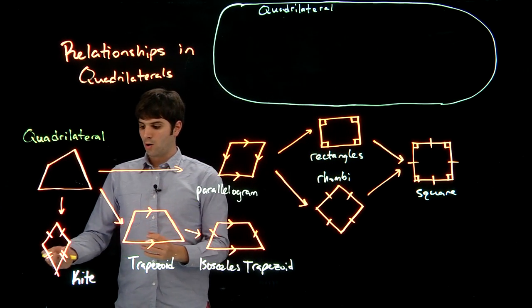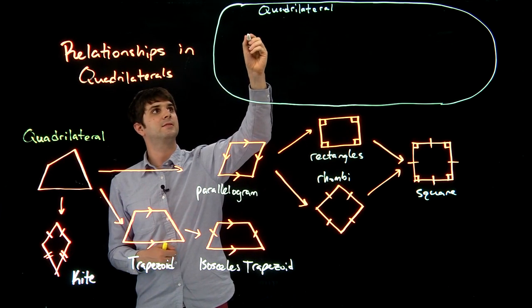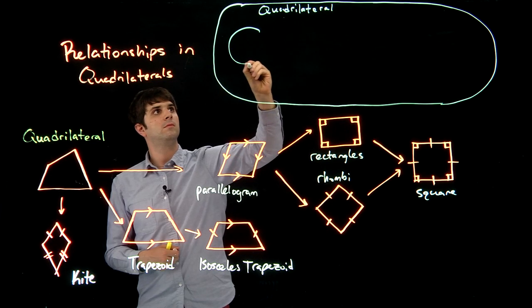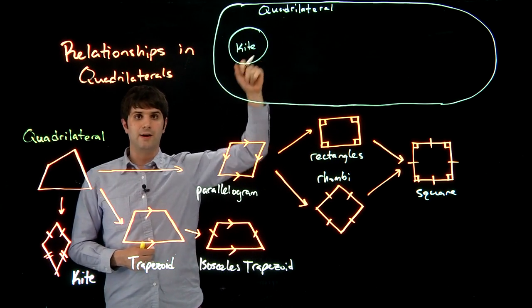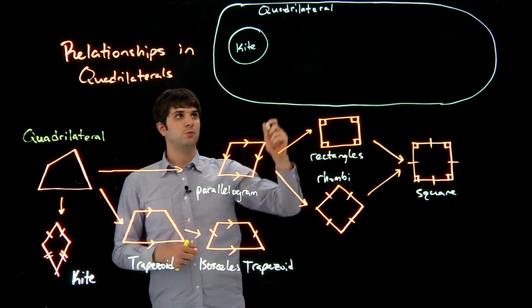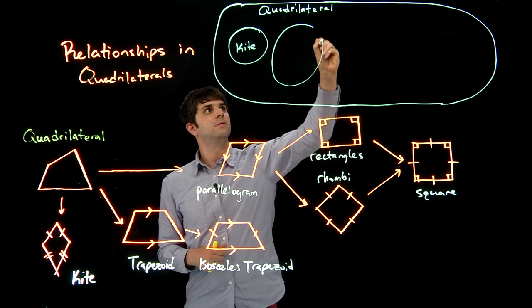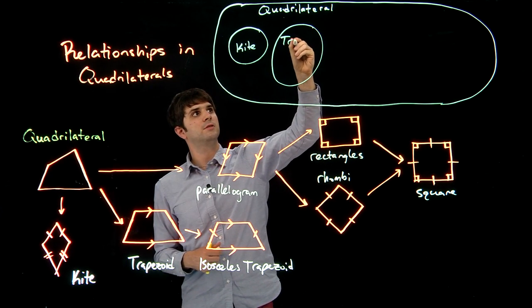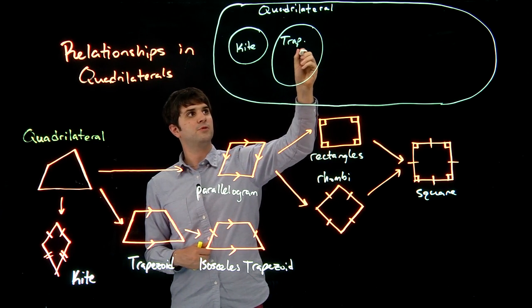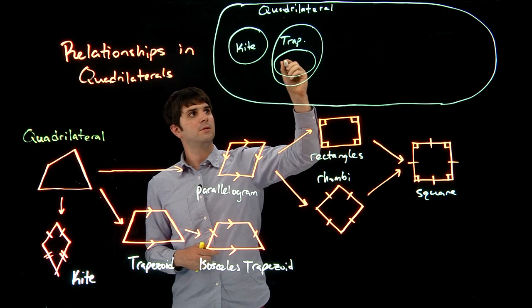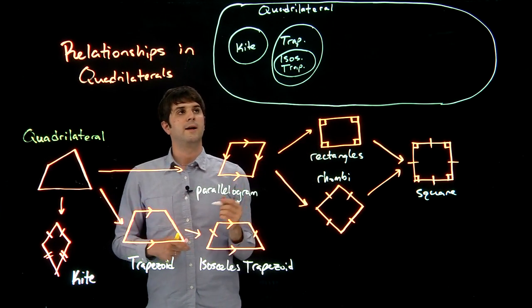And again, we have a few different types of quadrilaterals. One we have kites. So we have kites. So all kites are quadrilaterals, but not all quadrilaterals are kites. We also have trapezoids. And within trapezoids, we also have isosceles trapezoid.